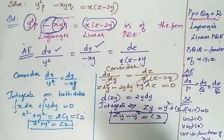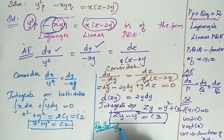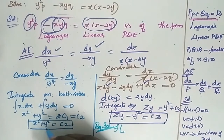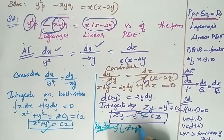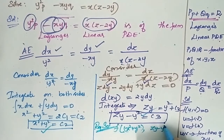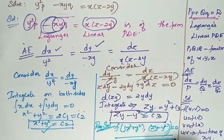Now the required solution is F(x² + y², zy - y²) = 0.